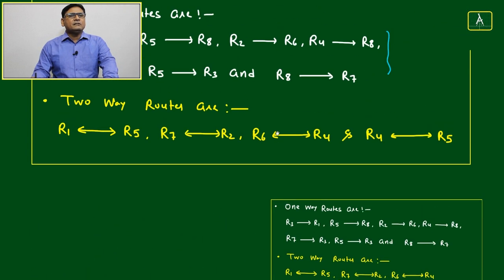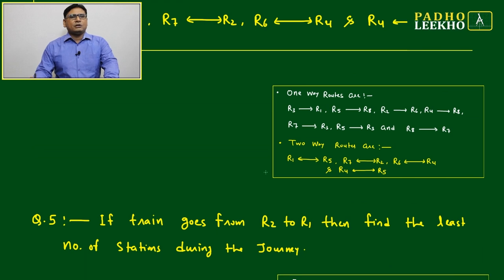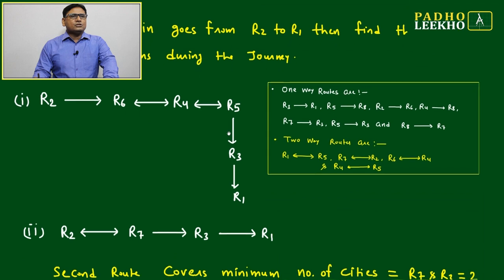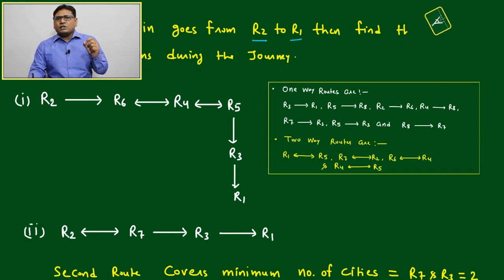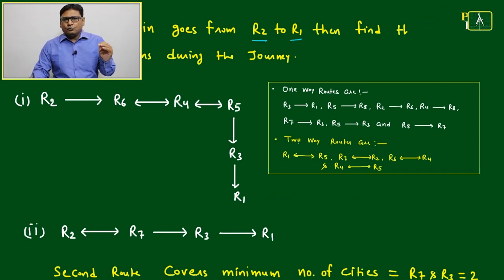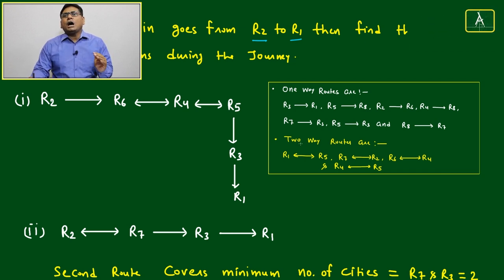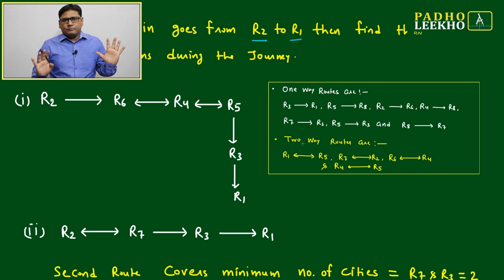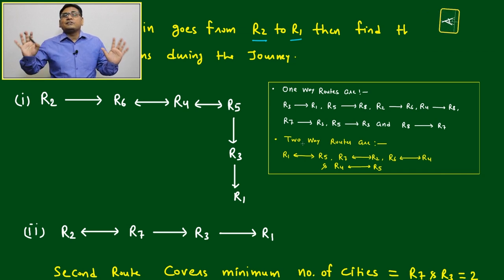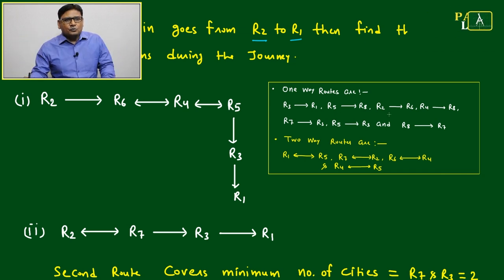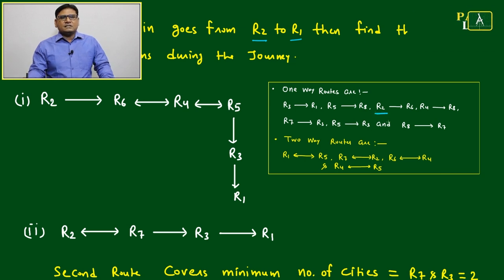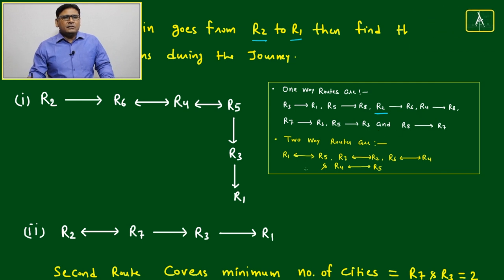This information is also compressed in a small table for handy reference. Now for question number five: if we have to start from R2 and go to R1, we first look at how many different possibilities we have from R2 to different stations.